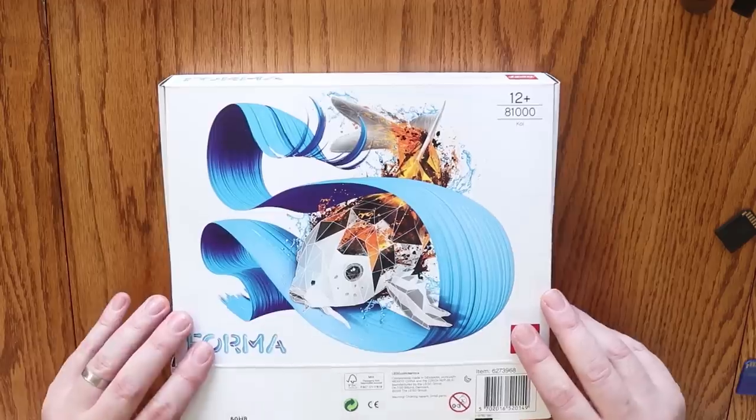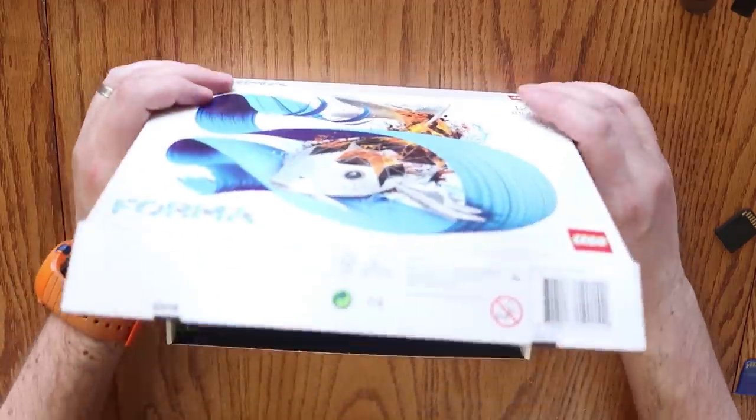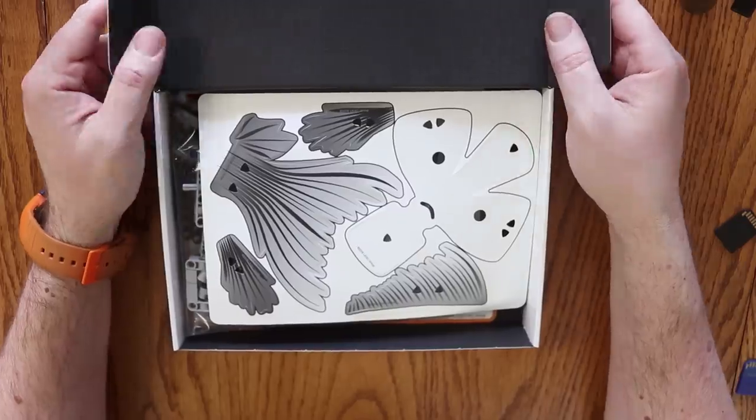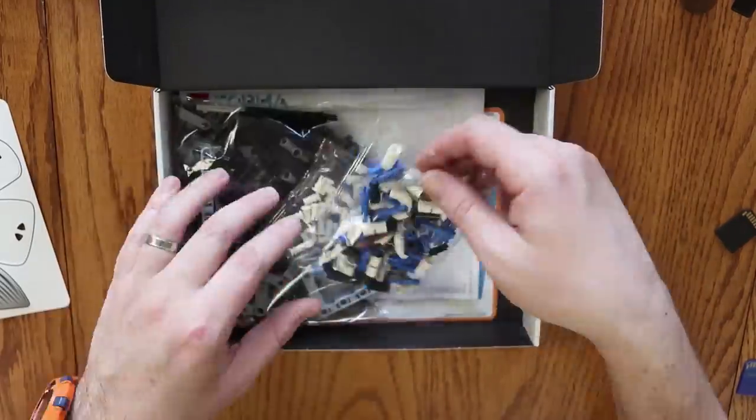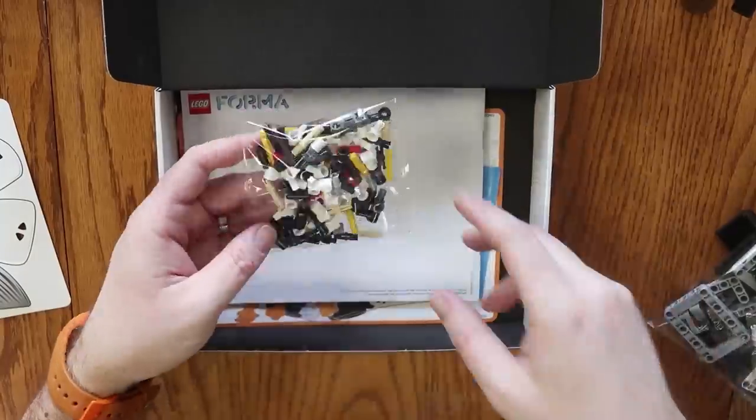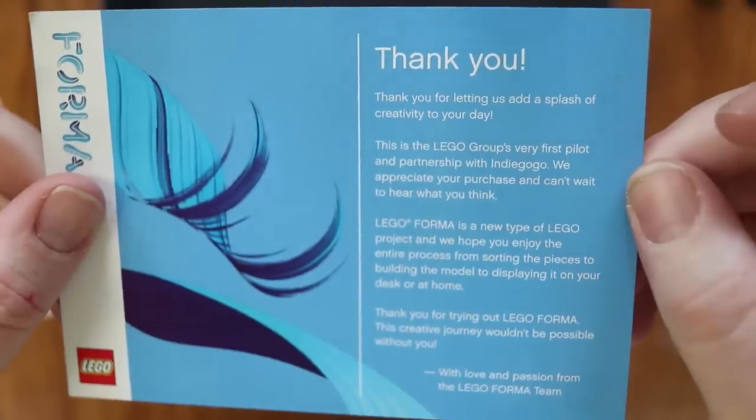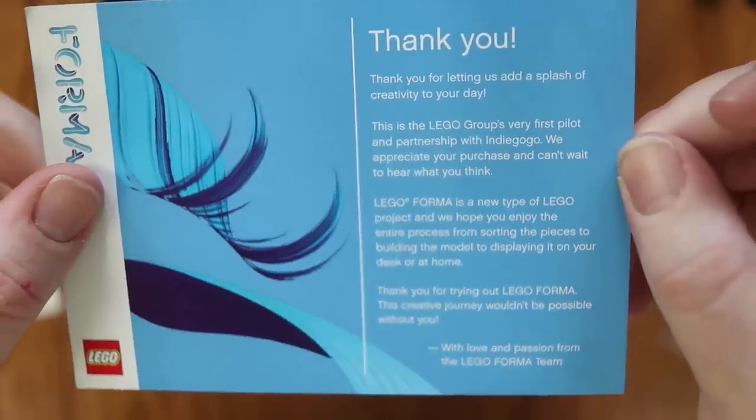Today we are looking at the LEGO Forma, an interesting new type of set for LEGO enthusiasts that was available only through crowdfunding on Kickstarter. When I received the Forma in the mail, I opened up the box. Inside was the standard skin for the Forma Koi model, a few packages of the elements necessary to build the model, the instructions manual, and a nice little thank you note from the team at LEGO that operated the Kickstarter project.